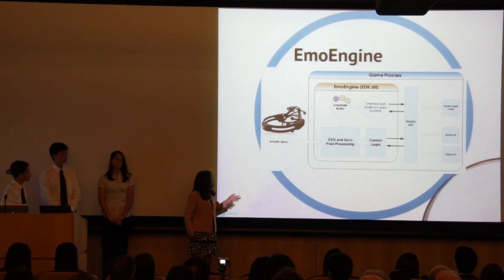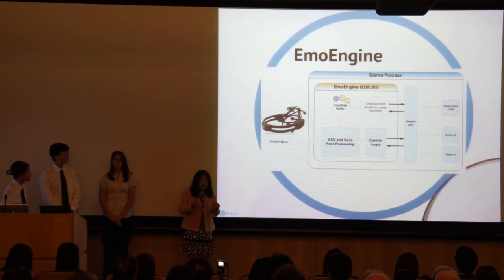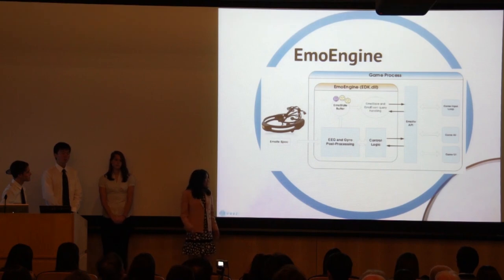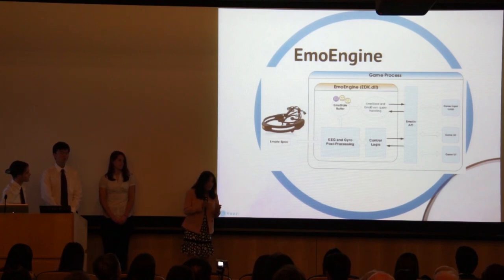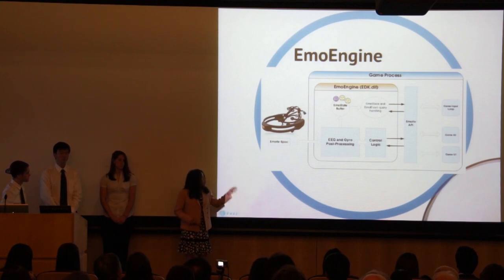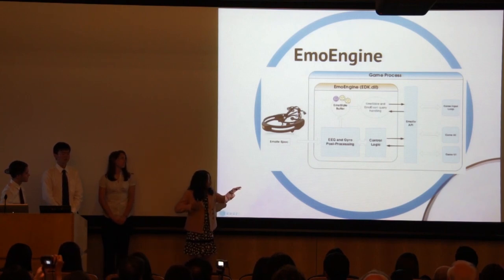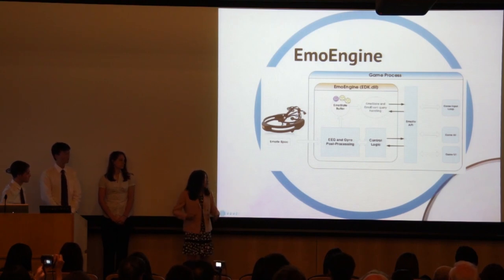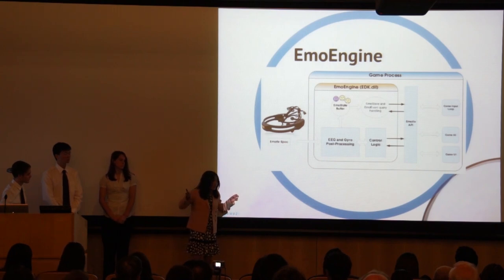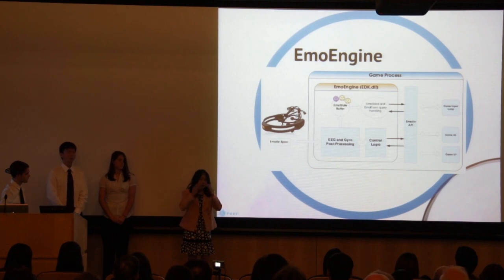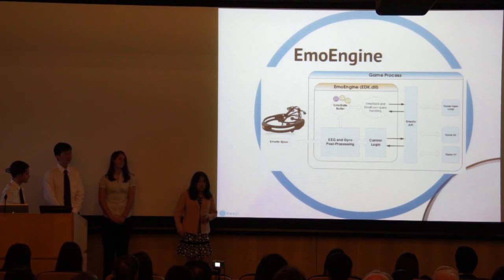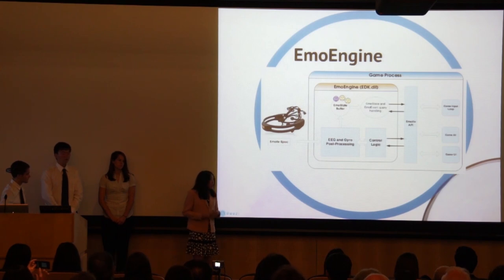The headset itself contains a piece of software that Emotive calls its EMO engine. What this engine does is take the raw EEG and gyroscope data, process it, and package it into a data structure called EMO state. Whenever there's a change or update in this EMO state, an EMO event is created, and this EMO event is directly accessible by the code through the API. The EMO state basically contains the state of your brain — it can tell what expressions you're making, like if your eyebrows are raised or lowered, whether you're smiling, if you're frustrated or meditating, and it can recognize whatever commands you have trained it to remember.